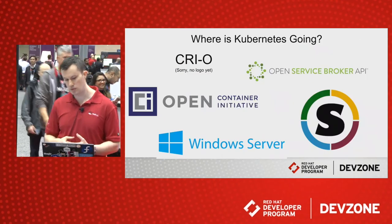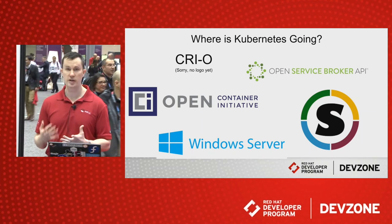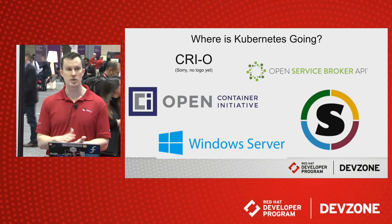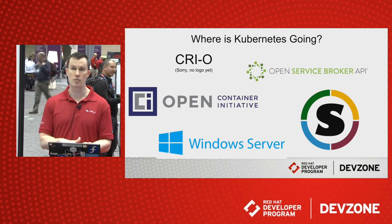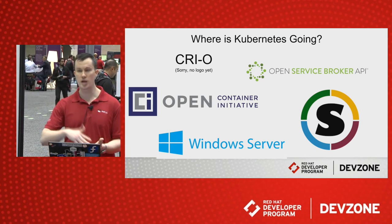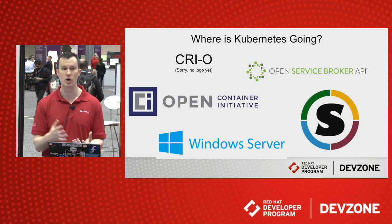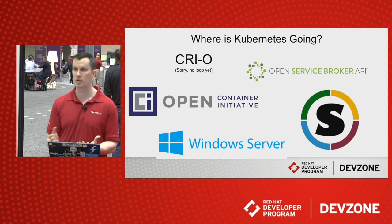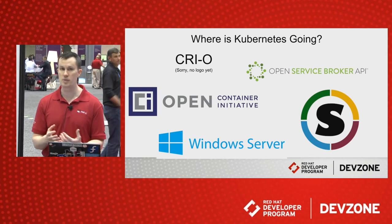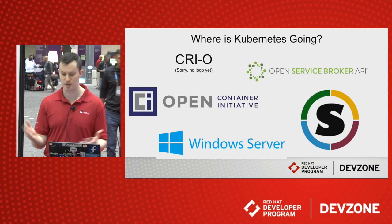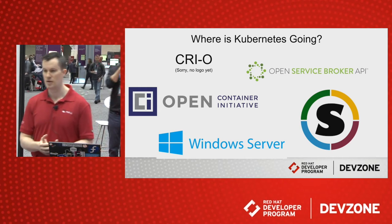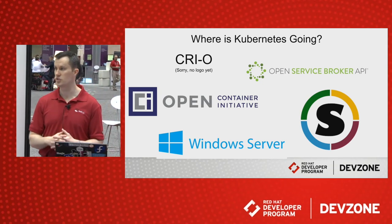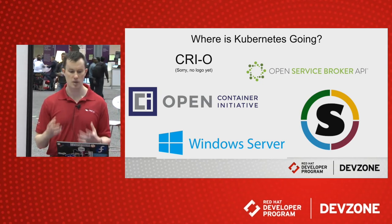Where are we going? A few things. One: the Open Container Initiative. Everyone says 'Docker containers,' but there's actually a standardized format now. If you go build a container with Docker build, it's actually creating an OCI-compliant container. The Open Container Initiative was created to avoid vendor lock-in, and it has buy-in from pretty much 100% of the vendors out there. Red Hat is the number one contributor right now, Docker is the second biggest, and IBM, VMware, and others also contribute.